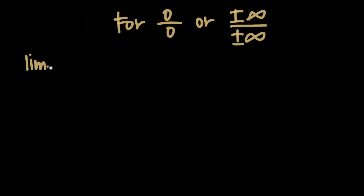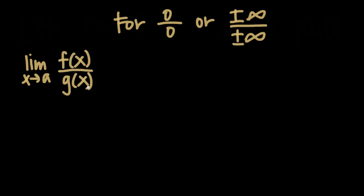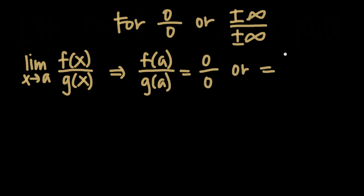It basically says that if you're taking the limit as x goes to a — so x is getting really close to a — of f(x) divided by g(x), so you've got two functions in a fraction, one in the numerator and one in the denominator, and you take the limit of the quotient of those functions as x gets close to a, then of course you're going to be plugging a in for x, so you'll end up with f(a) over g(a). L'Hôpital's rule says that if you end up in that situation and you get zero over zero, or positive or negative infinity over positive or negative infinity, then you end up with an indeterminate form at that point x equals a.